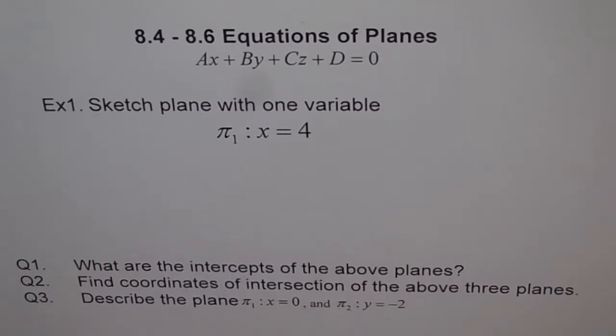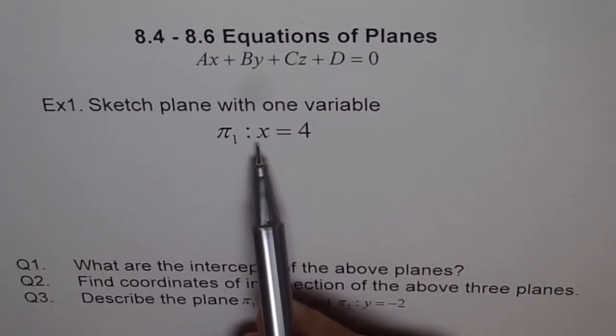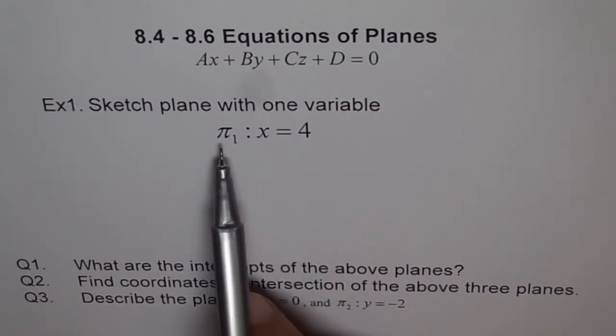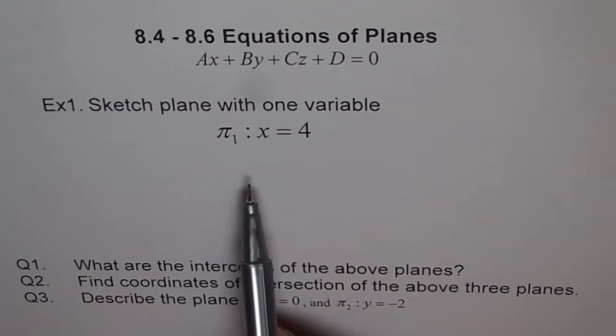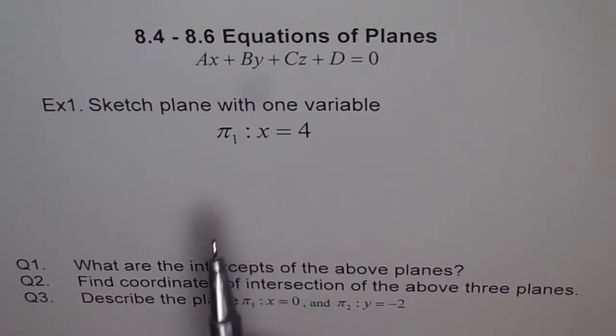So I'll start from very basics. Now example number one says sketch plane with one variable pi one where x equals four. These Greek alphabets are used to represent a plane and subscript just to number them. When we say x equals four, at times it could be a line, but when we write with pi one we know it's a plane. In vectors it is always very confusing to figure out whether it represents at times a point, line, or a plane. But context always makes it clear. So look at the context very clearly.